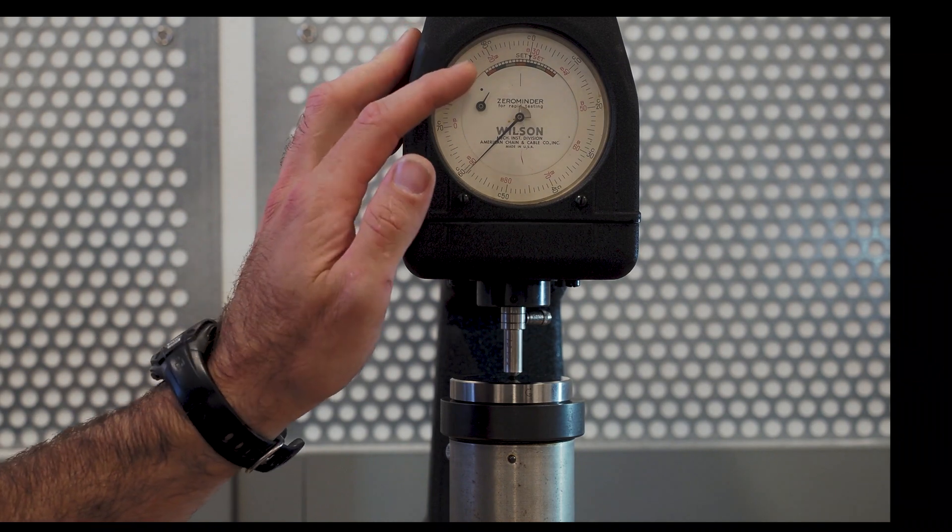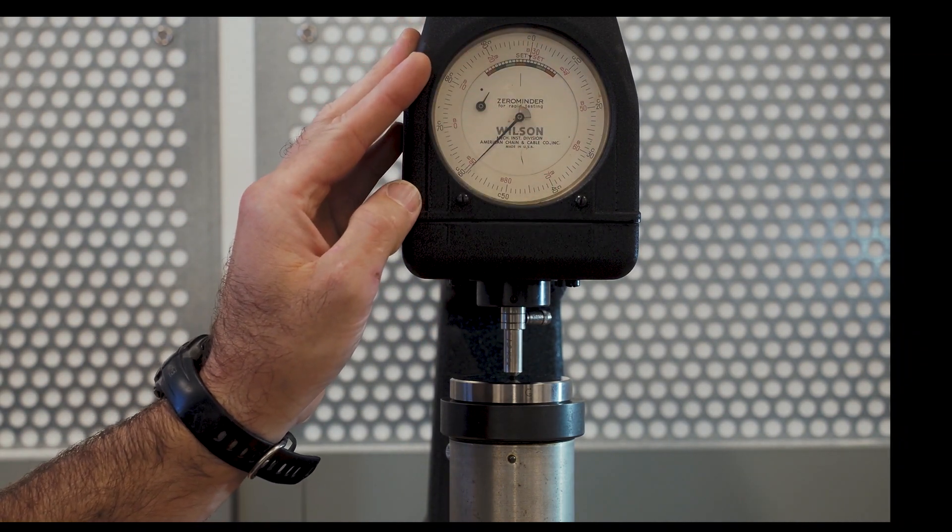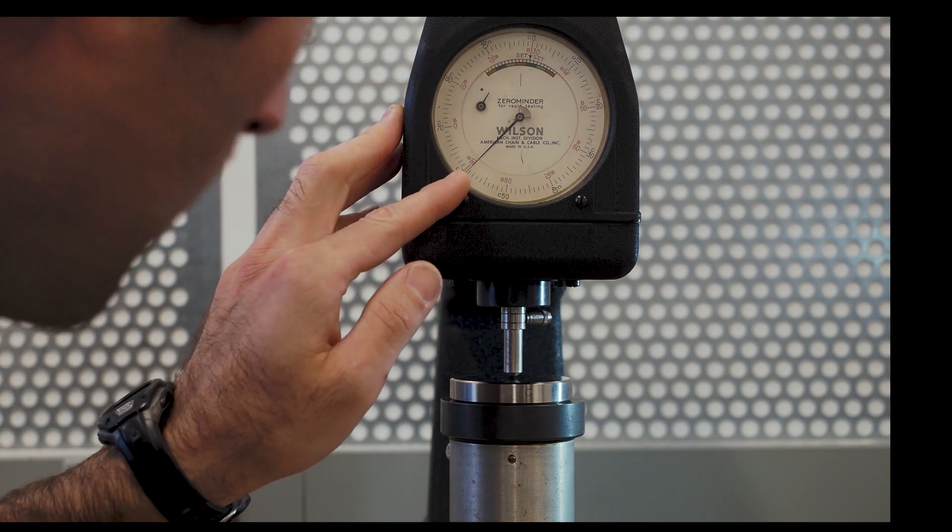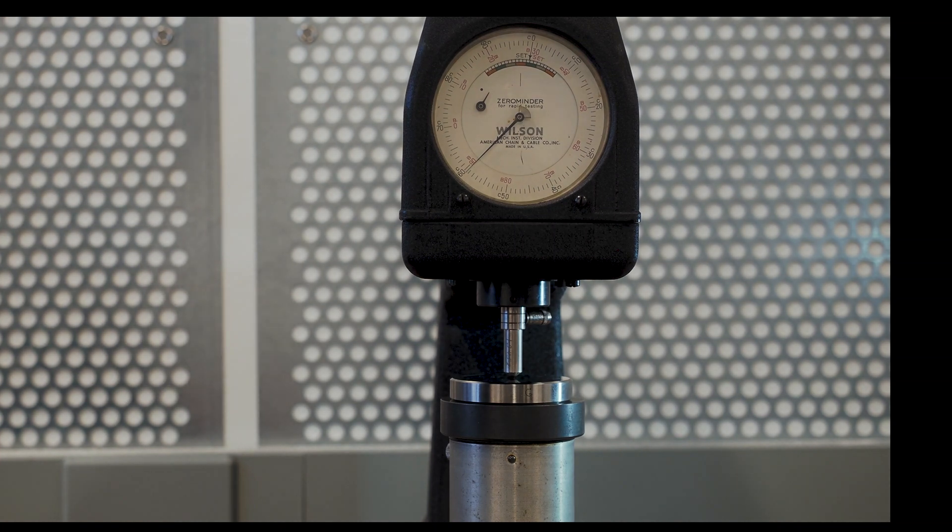This dial has two sets of numbers. The red numbers are the B scale and the black numbers are the C scale. So I'm going to read off the C. I'm right under Rockwell C of 60. The block calls for 64. So we got a little variation, but if I took a couple more readings, it would probably zero in pretty close to what we were looking for.